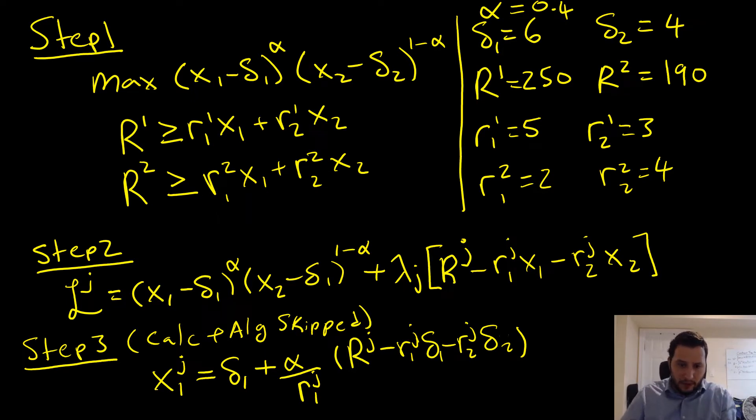Step number two is that we're going to write our constraint specific Lagrangian, meaning that we're going to be considering one constraint at a time.